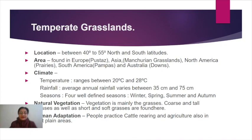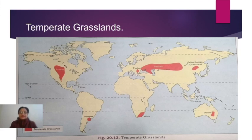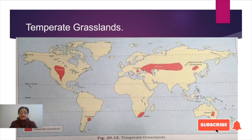Looking at the map, temperate grasslands in North America are found in the interior parts — a part of the USA and Canada situated between the Great Lakes and the Rockies. This region is very famously known as the Prairies.